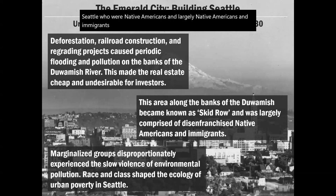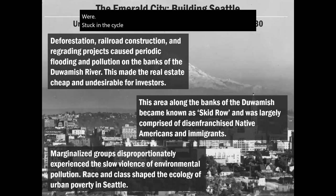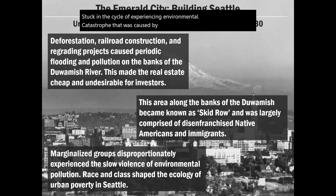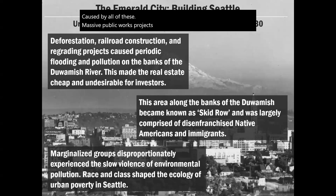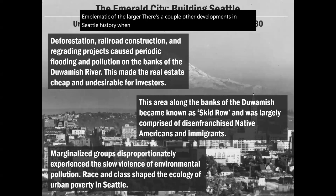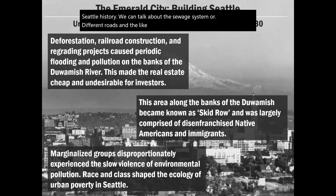Already pushed into impoverished areas by racial exclusion, those areas became further impoverished because they disproportionately experienced environmental catastrophe, which further worsened the value of the land. The most impoverished people in Seattle — largely Native Americans and immigrants — were stuck in a cycle of experiencing environmental catastrophe caused by massive public works projects. Race and class shaped what's called the ecology of urban poverty in Seattle at this time.